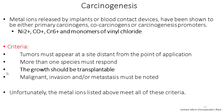Regarding carcinogenesis, metal ions released by implants or blood contact devices have been shown to be either primary carcinogens, co-carcinogens, or carcinogenesis promoters. Materials such as nickel-iron, cobalt-chromium-iron, monomers of vinyl chloride, silica, and carbon nanotubes have been observed to enhance carcinogenesis. The criteria include: tumors must appear at a site distant from the point of application; more than one species must respond; the growth should be transplantable; and malignant invasion or metastasis must be noted. Unfortunately, the metal ions and degradation products listed meet all of those criteria.